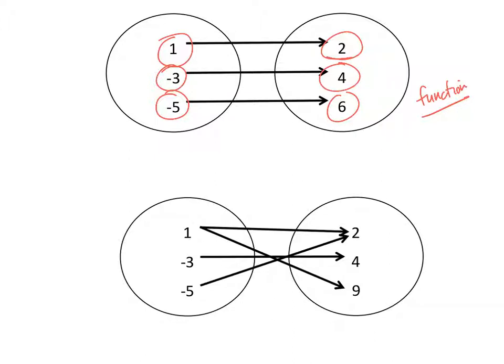But now look at this one. The number 1 is being mapped to the 2 and to the 9. That means I've got the ordered pair (1, 2) and (1, 9) as part of this relation. That is enough to show that this one is not a function.